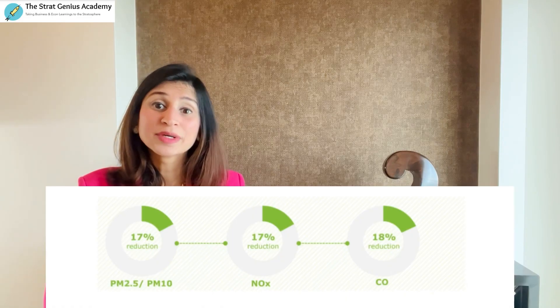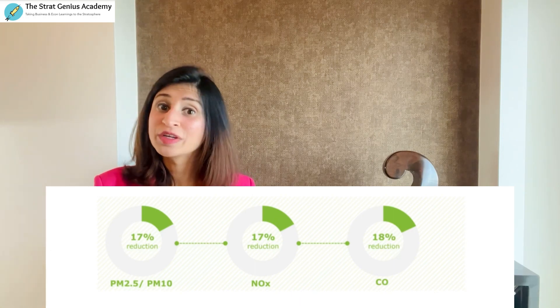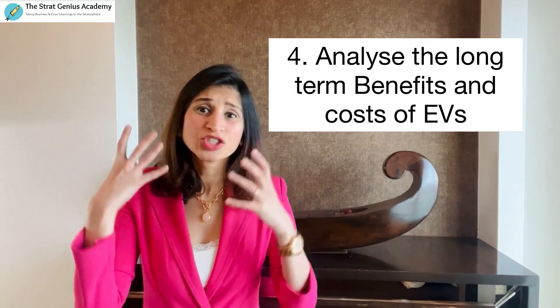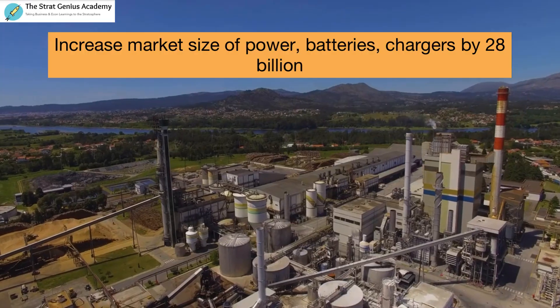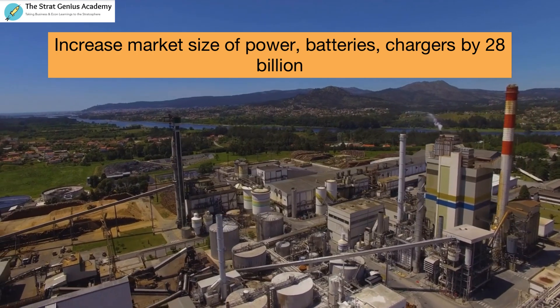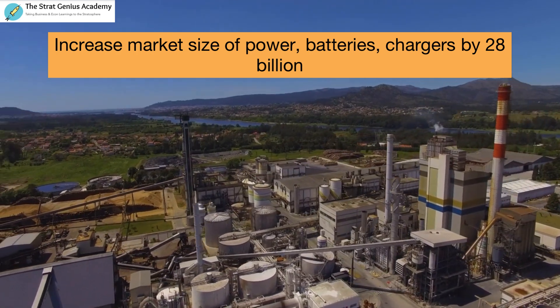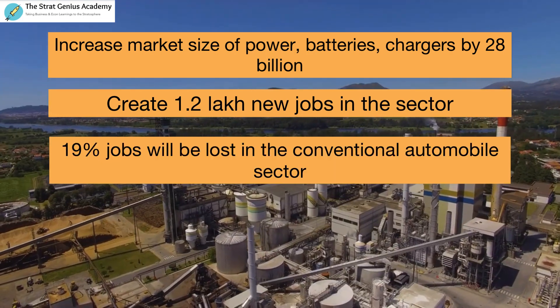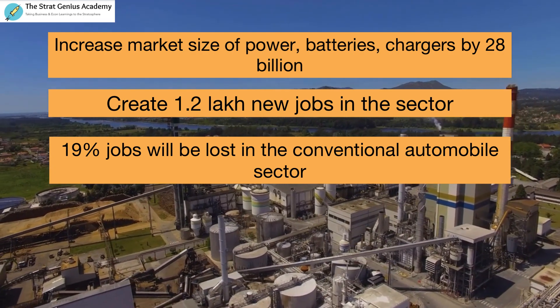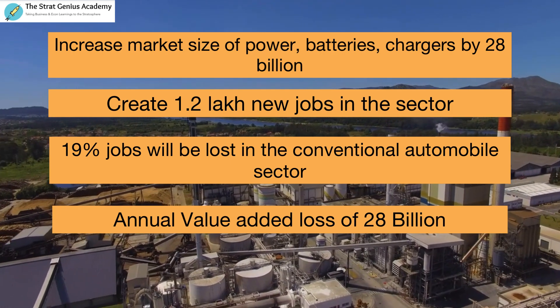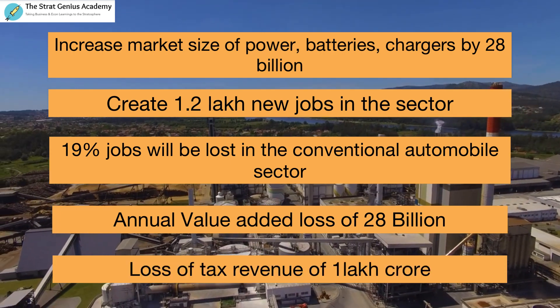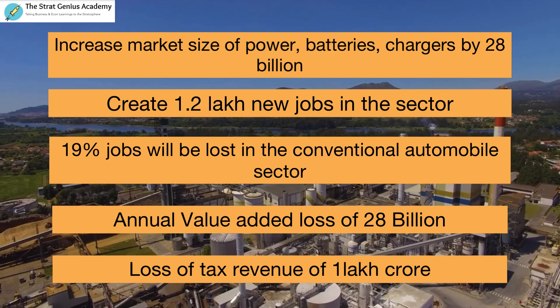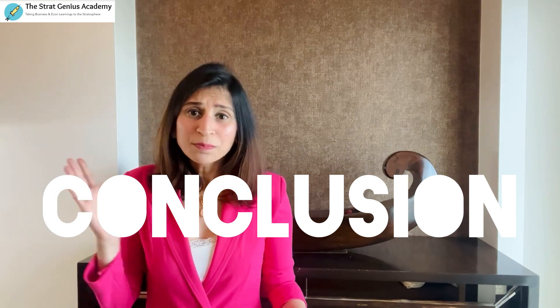You can also analyze pollution data in the future with a 30% penetration of EVs and the ultimate long-run benefit. Beyond oil dependency and pollution, look at points like how it could increase the combined market size of powertrain batteries and public chargers to more than 28 billion. Additionally, it could create 1.2 lakh new jobs in the sector. Be sure to also point out the negatives: 19% of jobs will be lost in the conventional manufacturing industry, an annual value-added loss of 28 billion, and state and central governments would lose tax revenue worth almost 1 lakh crore from reduced oil and diesel sales. This finishes your economic analysis.